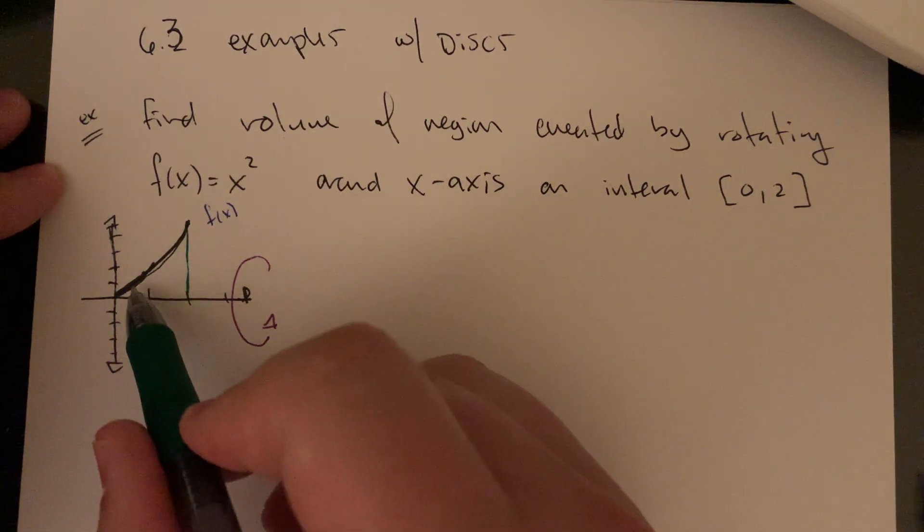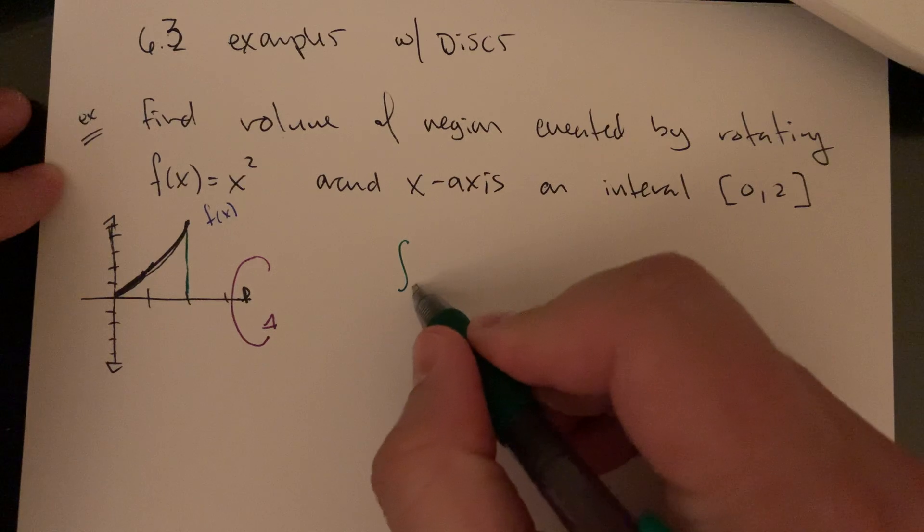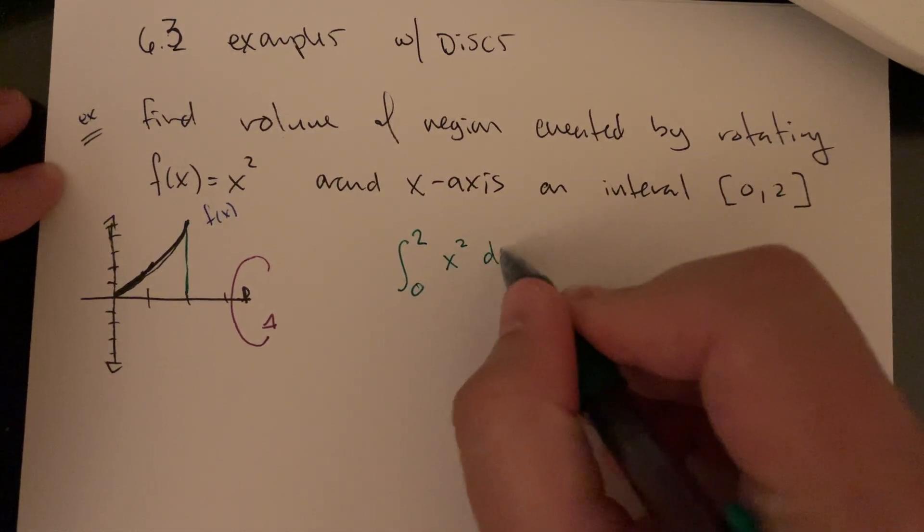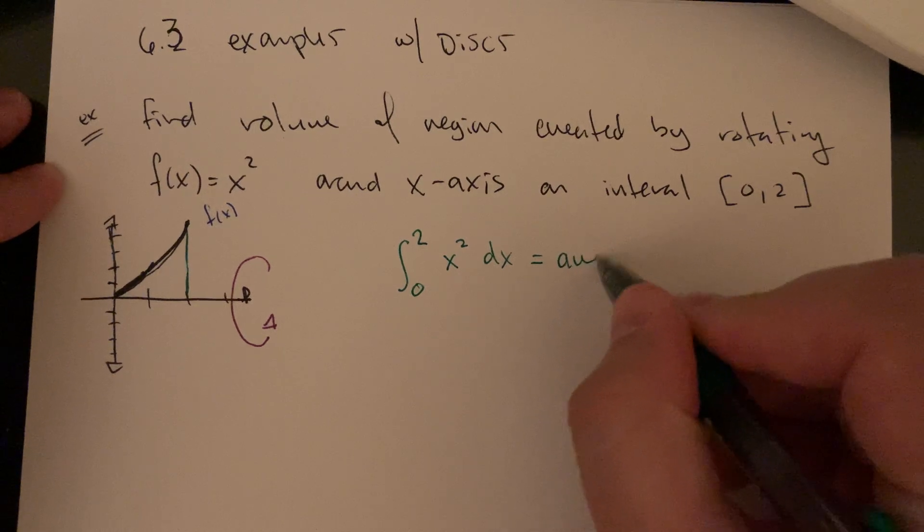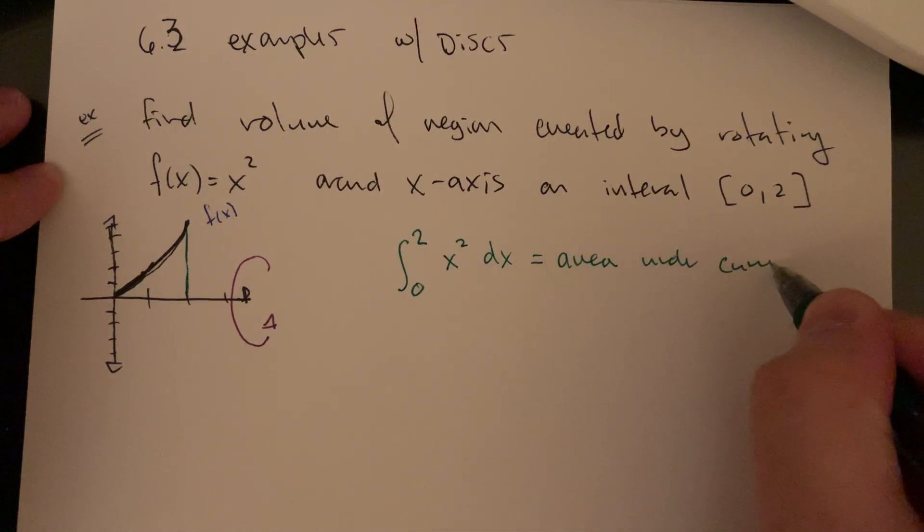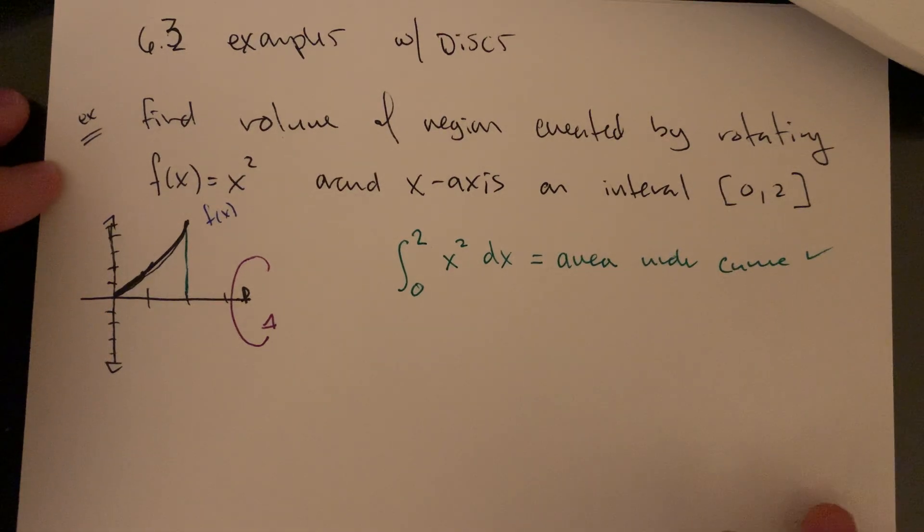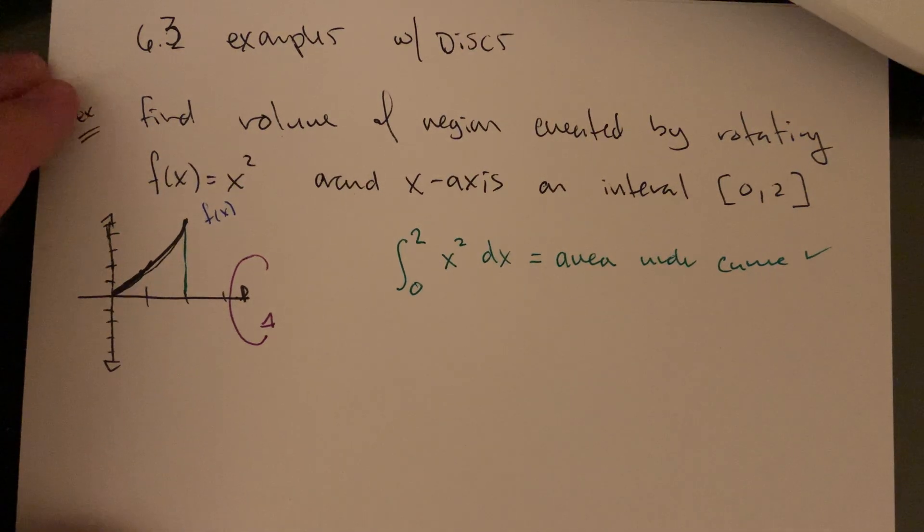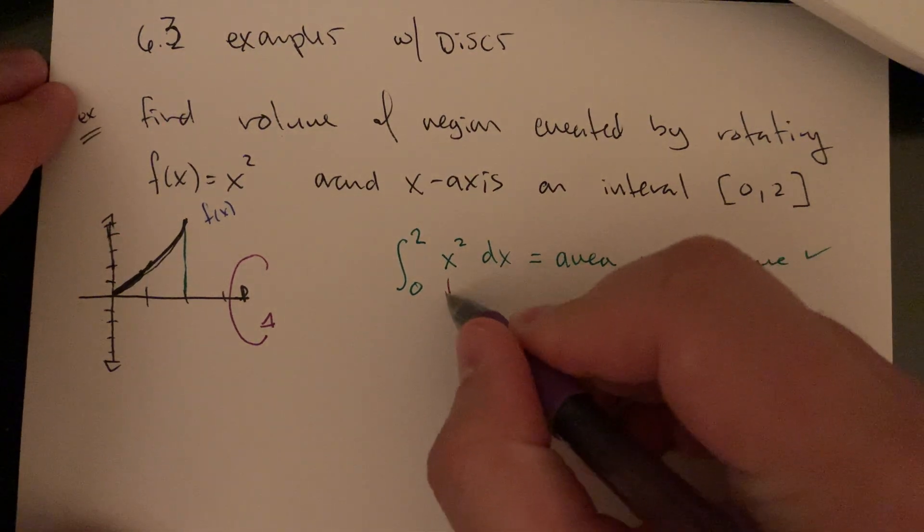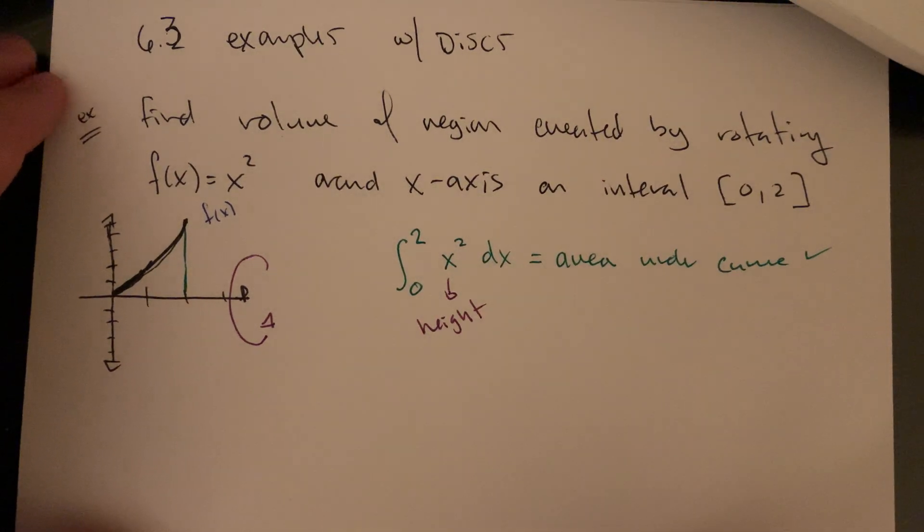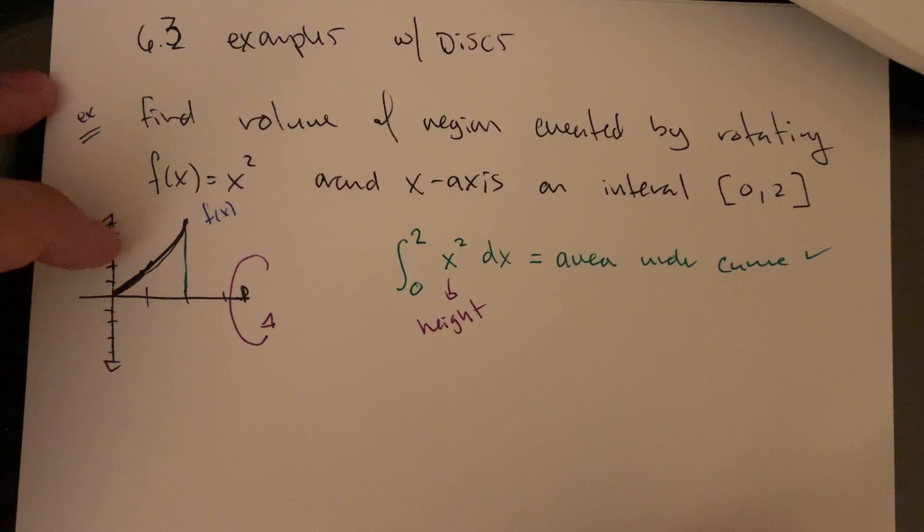If I just do an integral from 0 to 2 of x² dx, that's going to get me the area under the curve. We've been doing that. That's the whole shtick. That's the fundamental theorem. We're good to go. The concept is that these x² values represent the height values. It's just the height of the function at each of these points.